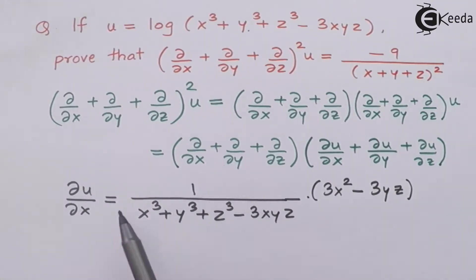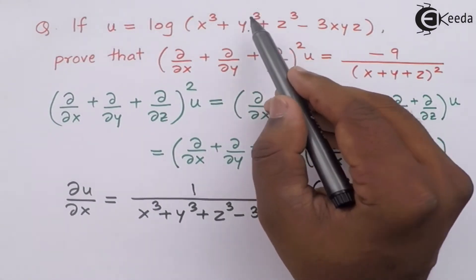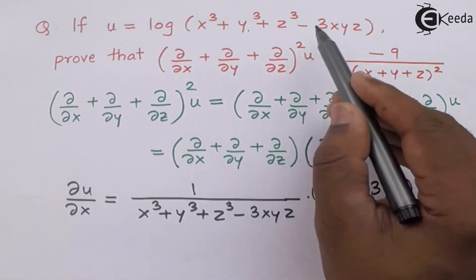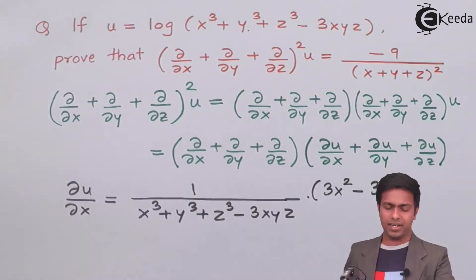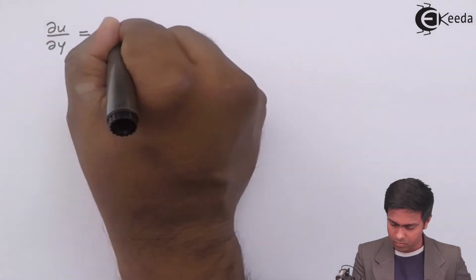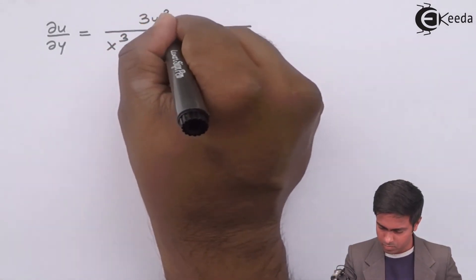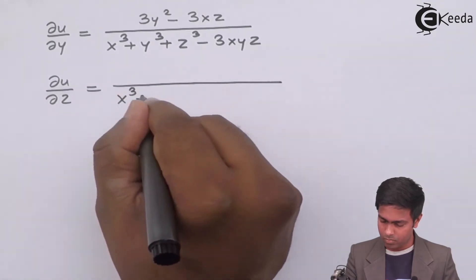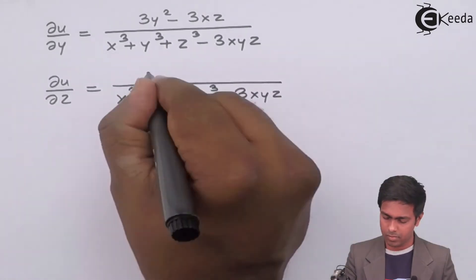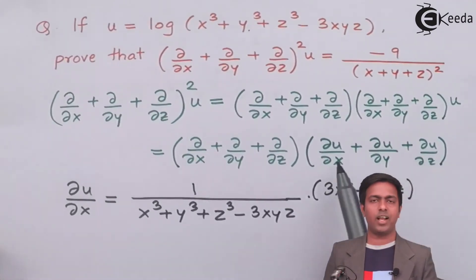Similarly, differentiating with respect to y: the denominator remains the same, the numerator gives 3y² from y³, zero from x³ and z³, and −3xz from −3xyz. So ∂u/∂y = (3y² − 3xz) / (x³ + y³ + z³ − 3xyz). And for ∂u/∂z we get (3z² − 3xy) / (x³ + y³ + z³ − 3xyz).